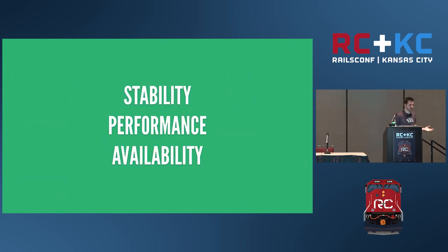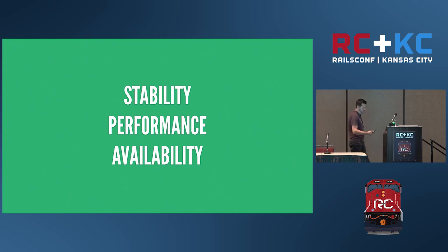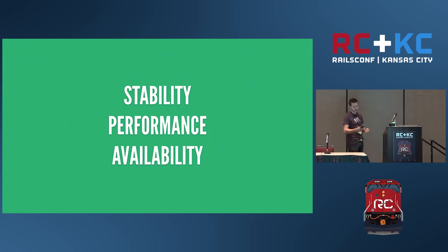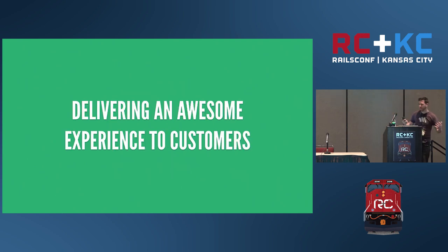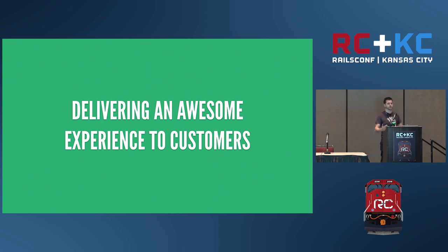So, production monitoring — what the hell is it? It breaks down into three core areas. Stability monitoring: this is what Bugsnag does — it detects if your software is broken, if there are crashes. Performance monitoring: tools like New Relic will tell you if your app is slow. And availability monitoring — basically uptime monitoring, something like Pingdom — is my site even responding to requests right now? But really, all of these come down to one thing: delivering an awesome experience to your customers.